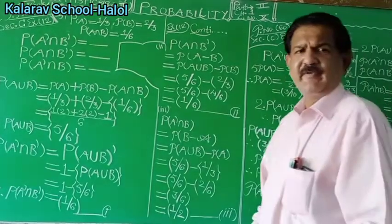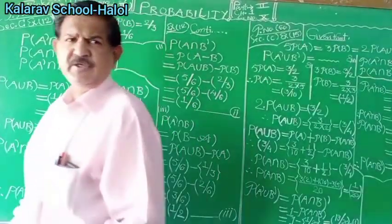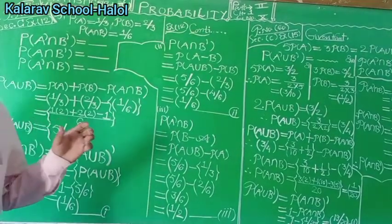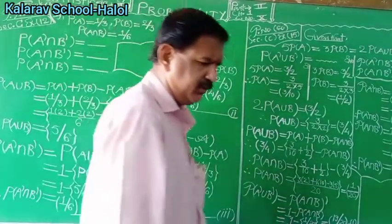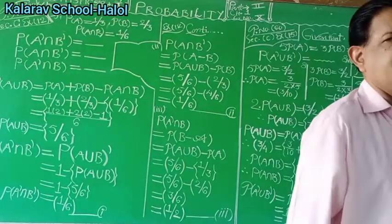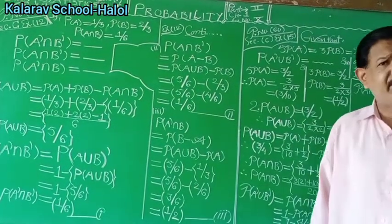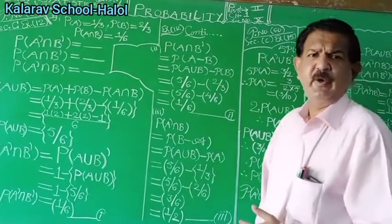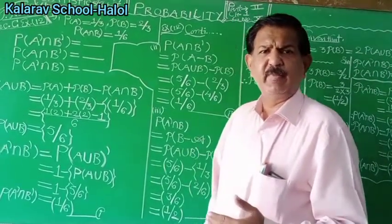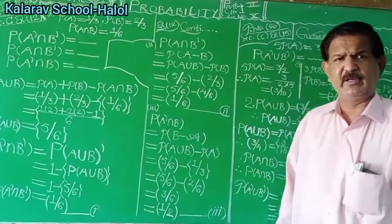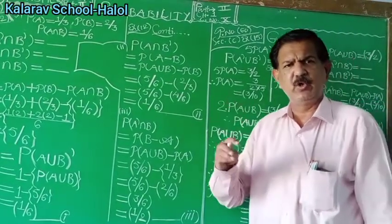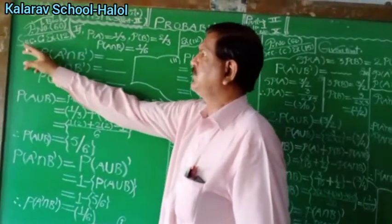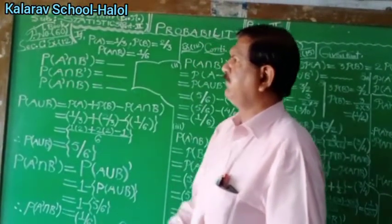Good morning everyone. Statistics part 2 — the important chapter: probability, chapter number 1. We have completed examples based on permutation, combination, addition rule of probability, multiplication rule of probability, as well as conditional probability. Today we take a few examples from our textbook on page number 60, section C, example number 12.